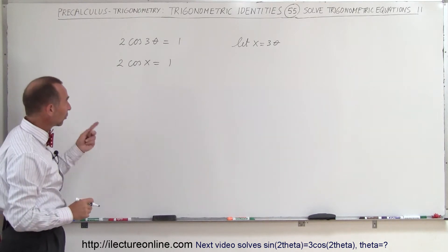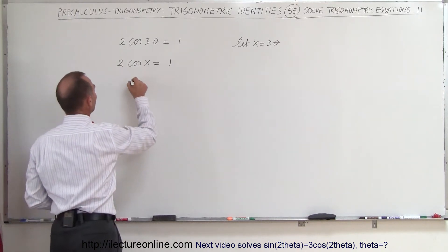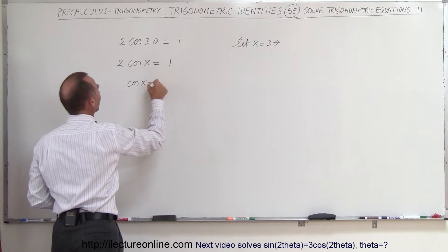We'll solve this equation and then substitute back to theta later on. This is a much easier way to approach it. So here we can first divide both sides by 2. We get the cosine of x is equal to 1 half.